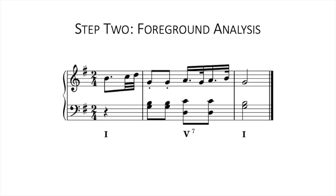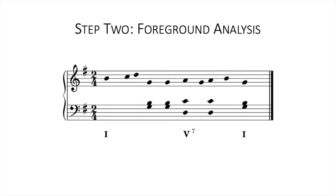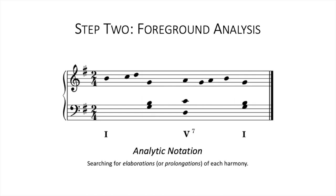For the second step, we're going to start by notating the music in a simplified way. We'll first get rid of any bar lines, then represent each note with a stemless quarter note head, and finally remove any same notes that occur consecutively. This is moving towards what is called analytic notation — we're essentially evacuating any kind of rhythmic notation. The purpose of this stage will be to identify elaborations on each harmony. These are foreground elaborations, or prolongations.